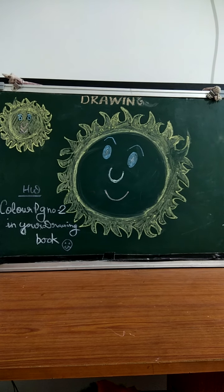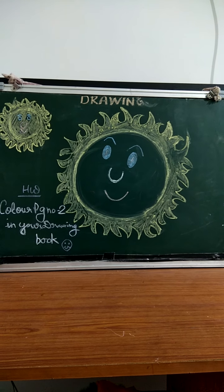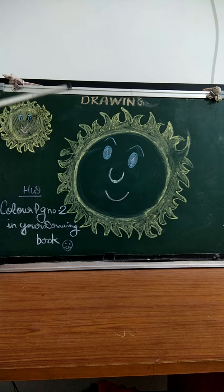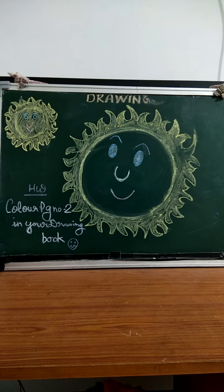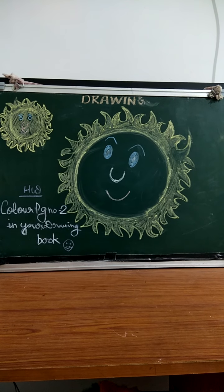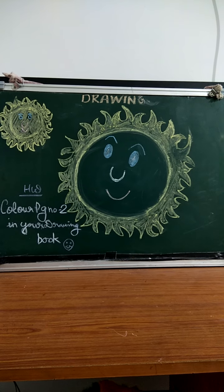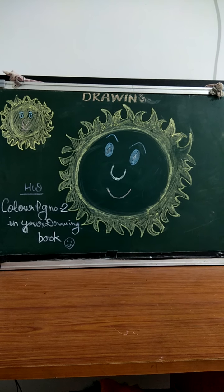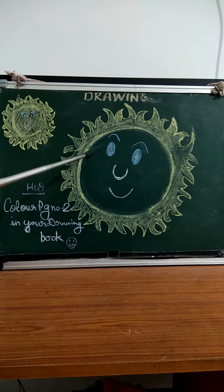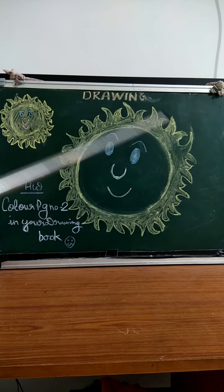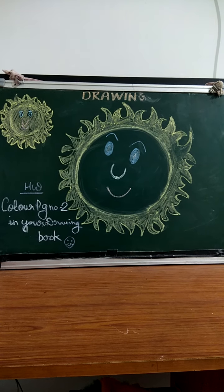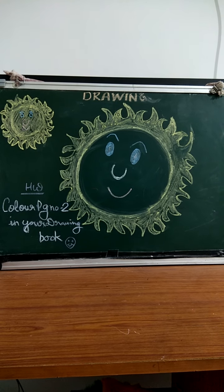Hello students. Today my subject is drawing. Previously we have colored horizontal lines and vertical lines. And today we are coloring the sun. This is a sun. So today we will color the sun.